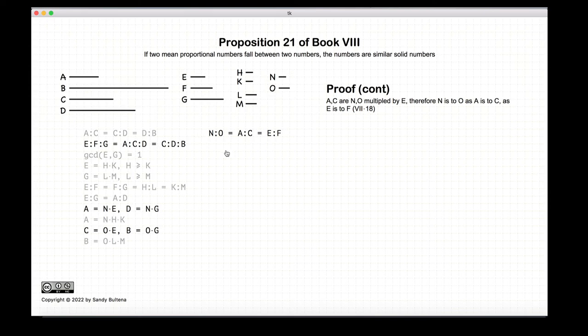So from proposition 18 of book 7, we know that the ratio of n to o is equal to the ratio of a to c, which is also equal to the ratio of e to f. So a to c is equal to e to f. And n to o is also equal to a to c. So we have n to o is equal to a to c is equal to e to f.